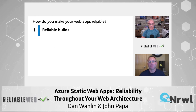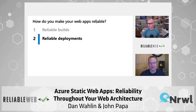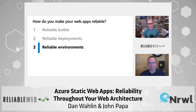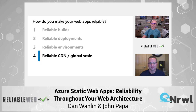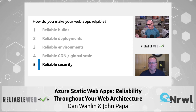How do you make your web apps reliable? We need reliable builds, reliable deployments, and then keep going. We've got environments too, like staging and production and QA, or whatever your environments might be, along with global scale, things like CDNs — content delivery networks. And then we can wrap things up with: what about security? Is that kind of important? Maybe just a smidge.